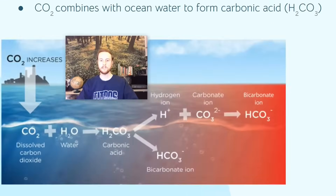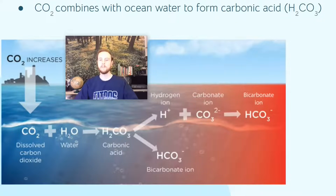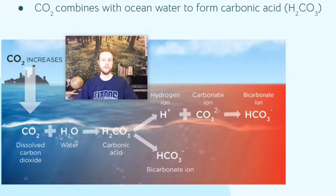If we take a look at this diagram, it helps us visualize this process. We see that CO2 increase in the atmosphere leads to CO2 increase in the ocean, then CO2 combines with water to form carbonic acid, or H2CO3. We can figure this formula out by looking at balanced equations — one carbon plus three oxygens plus two hydrogens gives us H2CO3. So it's helpful to have some basic chemistry knowledge here.